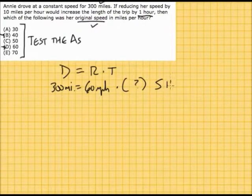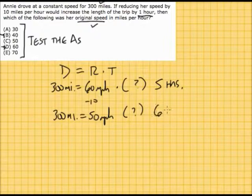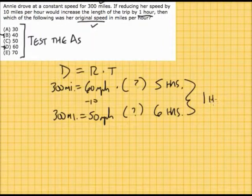Now the question says if you drop the speed 10 miles per hour, your time should go up by an hour. So if we drop the 10, we'd be at 50 miles per hour. And if we're going 300 miles at that speed, how much time would that take? Well, 50 times 6 hours is 300 miles. And notice that's the exact one hour difference that we're looking for.